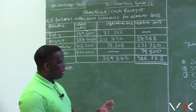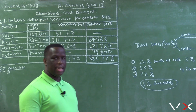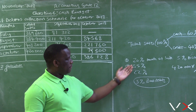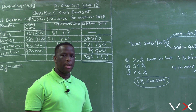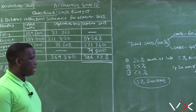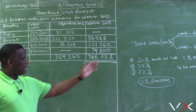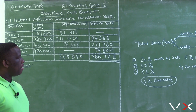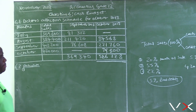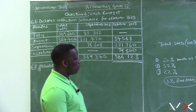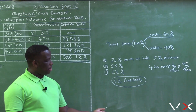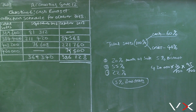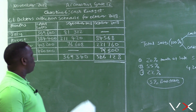What is important for learners when doing the debtors collection schedule is to be very clear about when collections start. For example, some questions say the first collection is 20 percent in the month following the month of sale — meaning if a debtor purchased in August, the first collection would be in September. In this question, 20 percent is collected in the month of sale itself. Make sure you identify this correctly, because if you get it wrong the entire calculation will be incorrect.